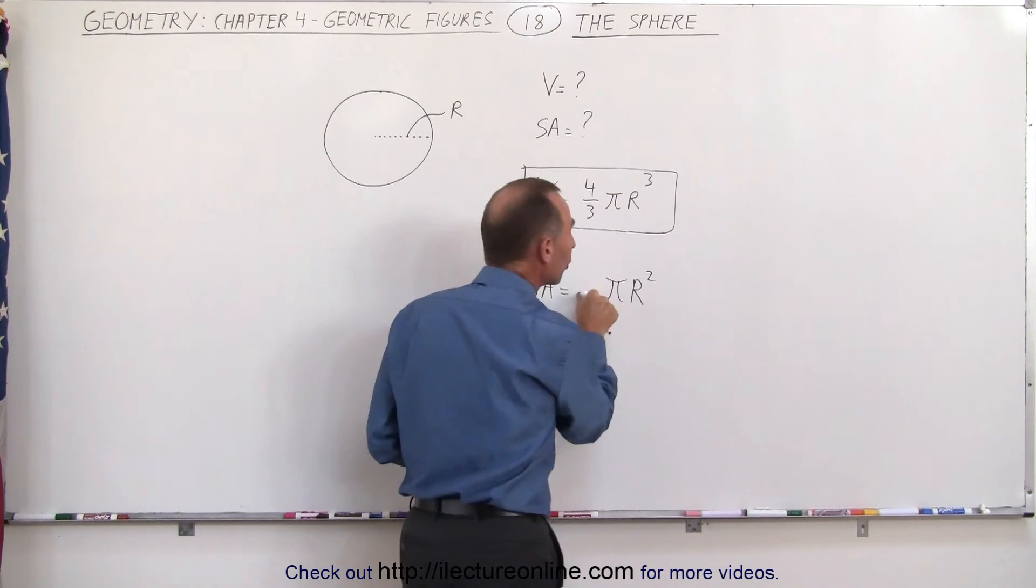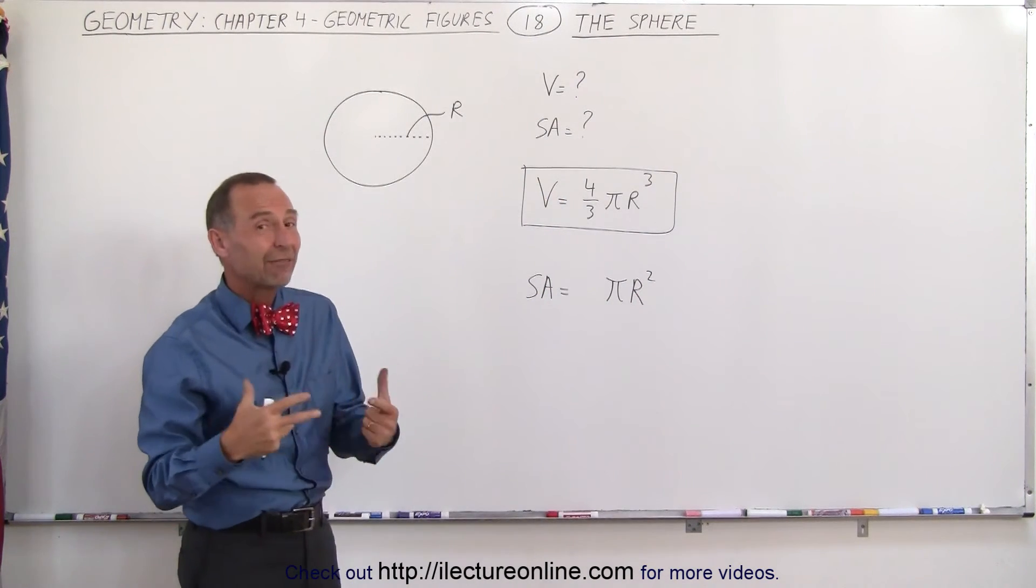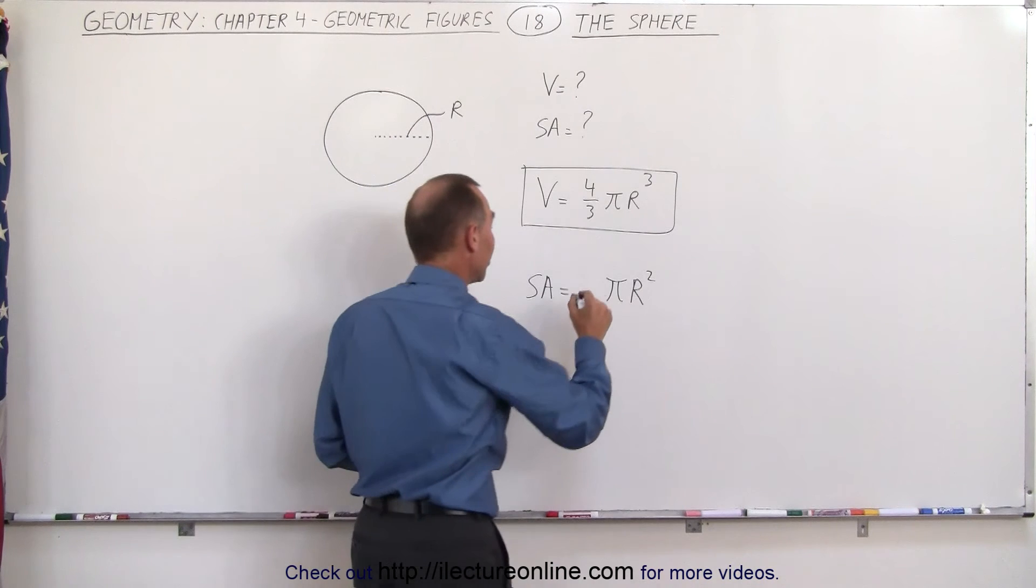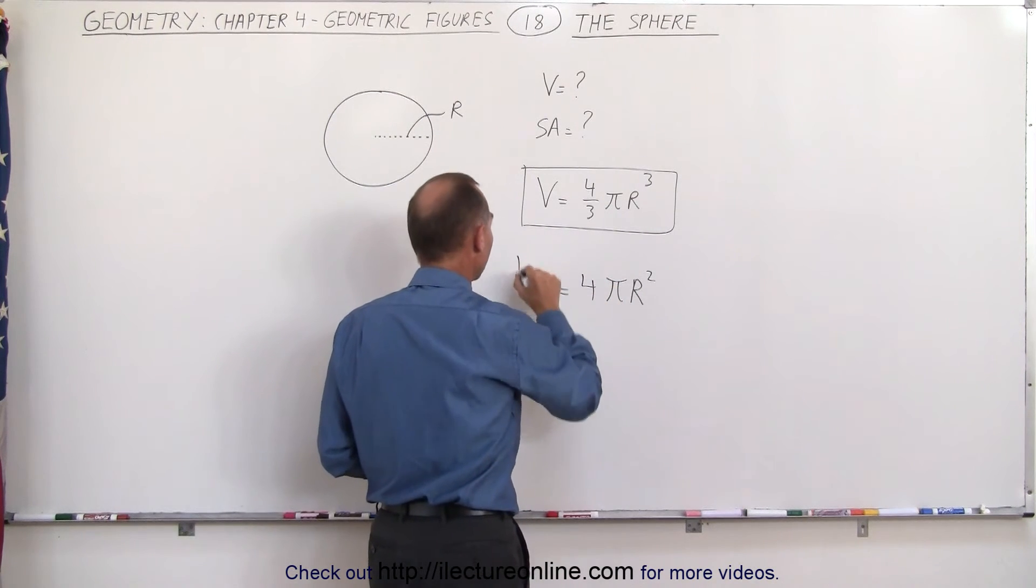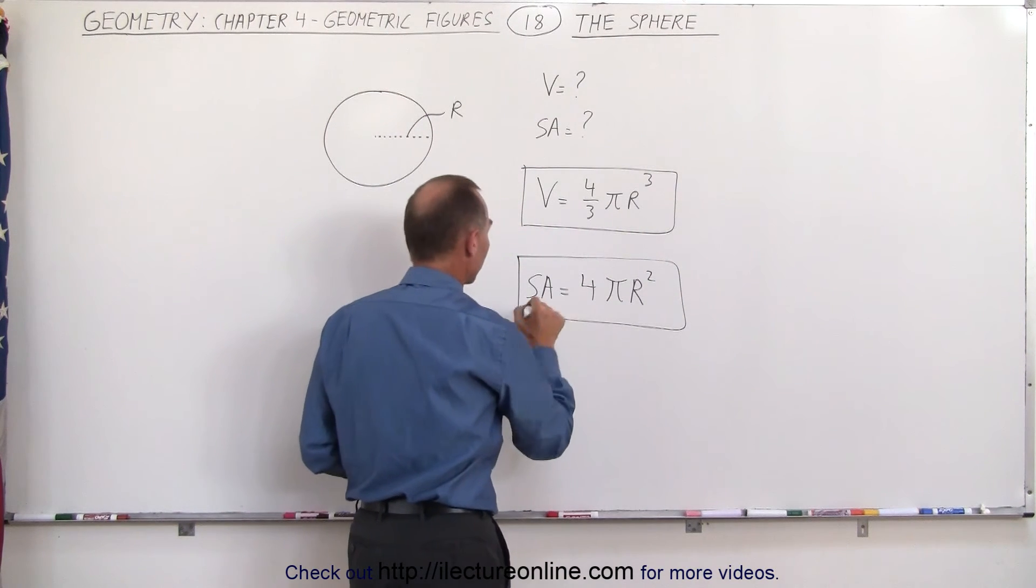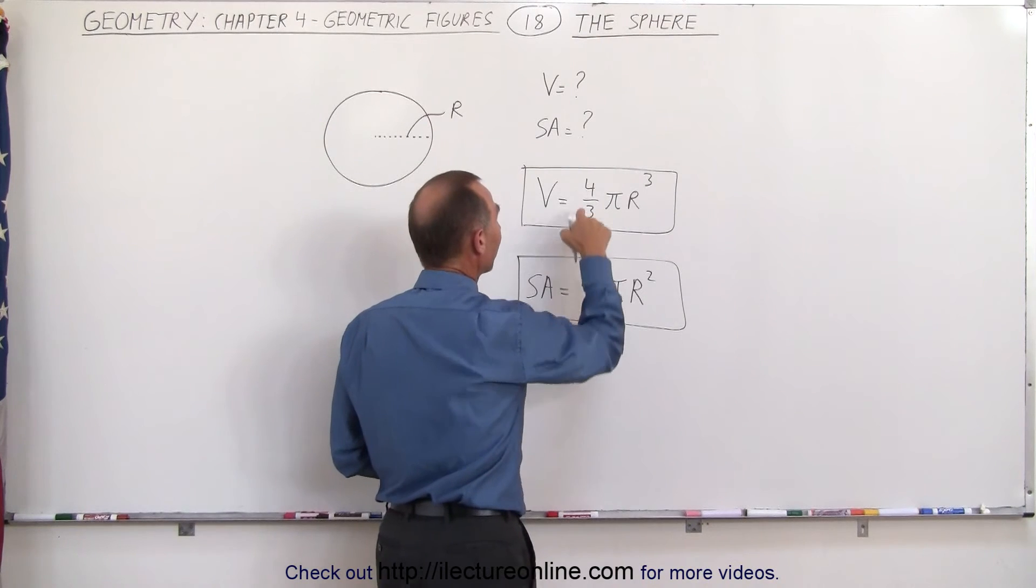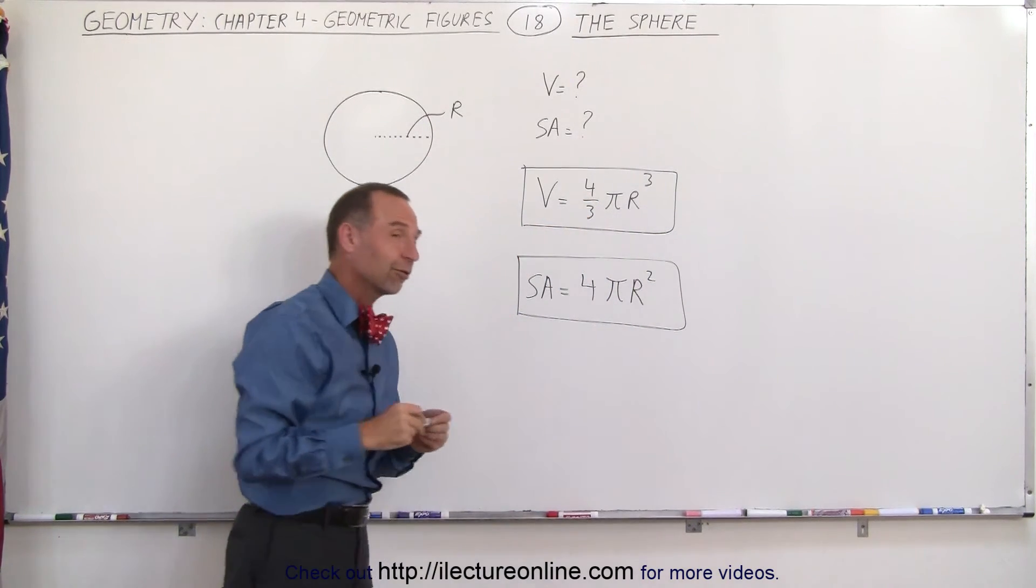Now the question is what number goes in front there and that you simply have to memorize and it turns out the number is 4. 4 pi r squared is the surface area of a sphere and four-thirds pi r cubed is the volume of a sphere.